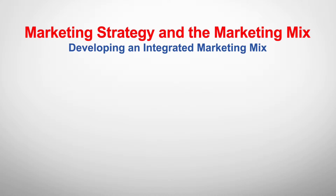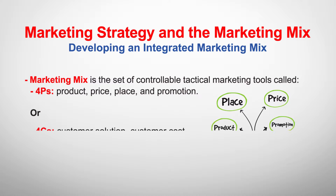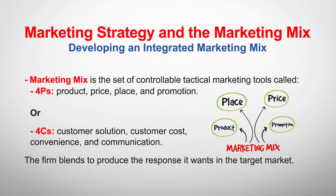Now let's develop an integrated marketing mix. The marketing mix is a set of controllable tactics, or marketing tools, called the four P's — or sometimes the four C's. The four P's are product, price, place, and promotion, while the four C's are customer solution, customer cost, convenience, and communication. The firm blends that mix together to deliver the value the customer wants.